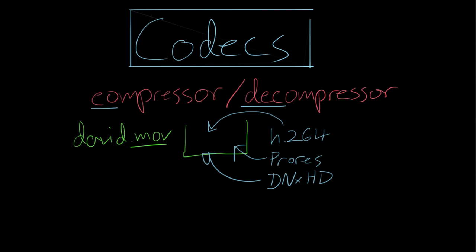Some other commonly used containers are things like .wmv — that's a Windows one. .avi is another Windows one. These are kind of going out of use. .mov is much more commonly used now. Make sure you understand when you're talking about a file whether you're talking about a codec or a container.